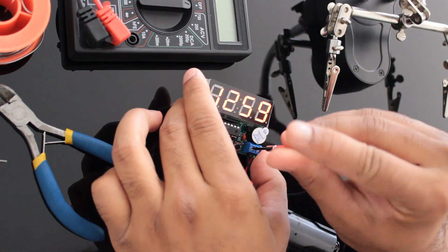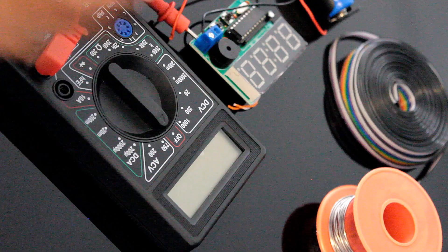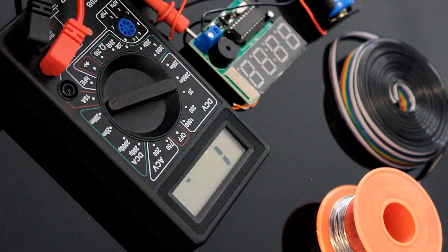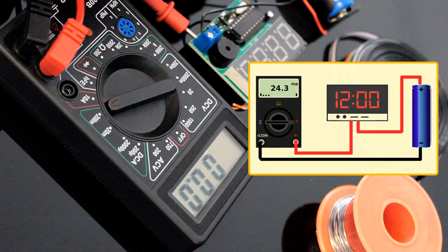So let's now do the math and find out how many hours this clock will last without recharging the battery. To calculate the current, we need to set up our multimeter to the current calculation mode, then connect the multimeter in series with the clock to the battery.